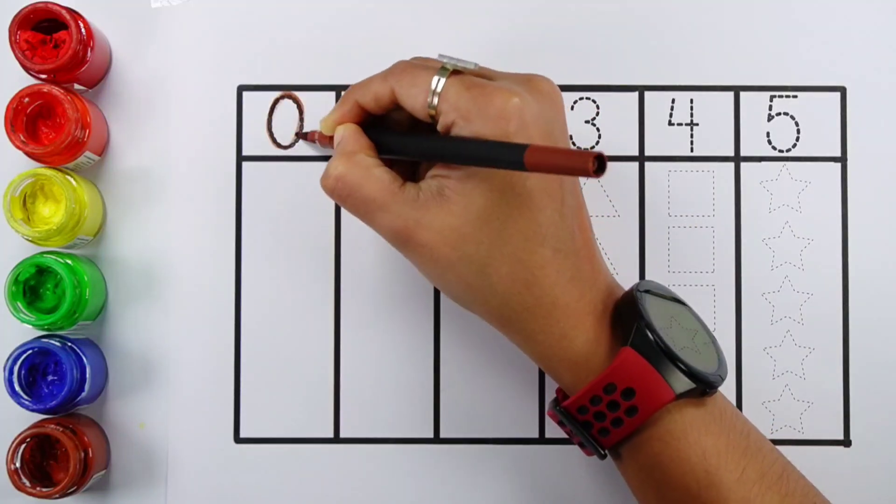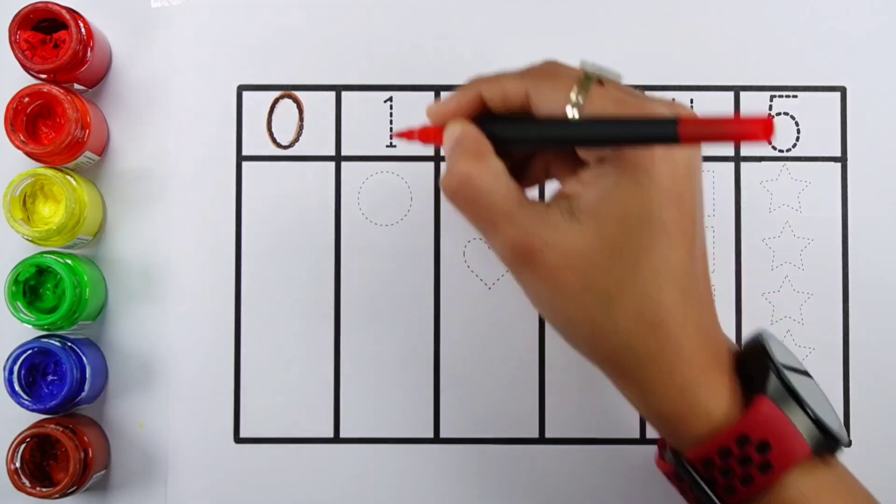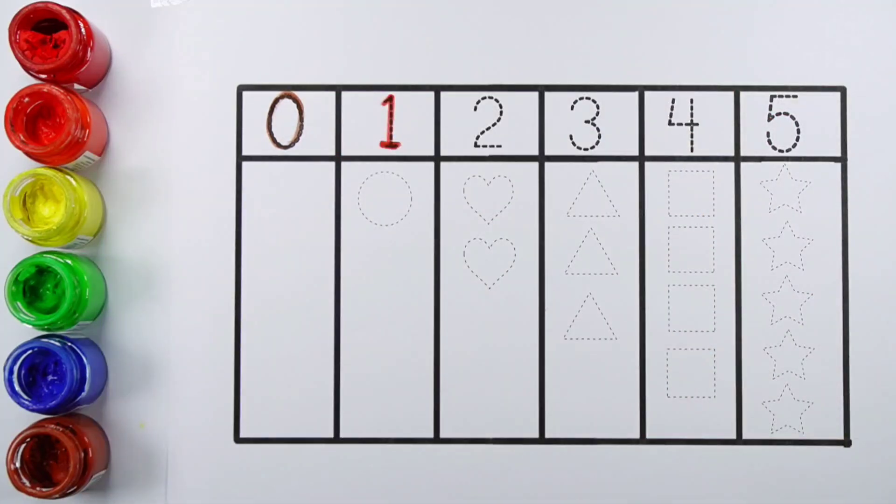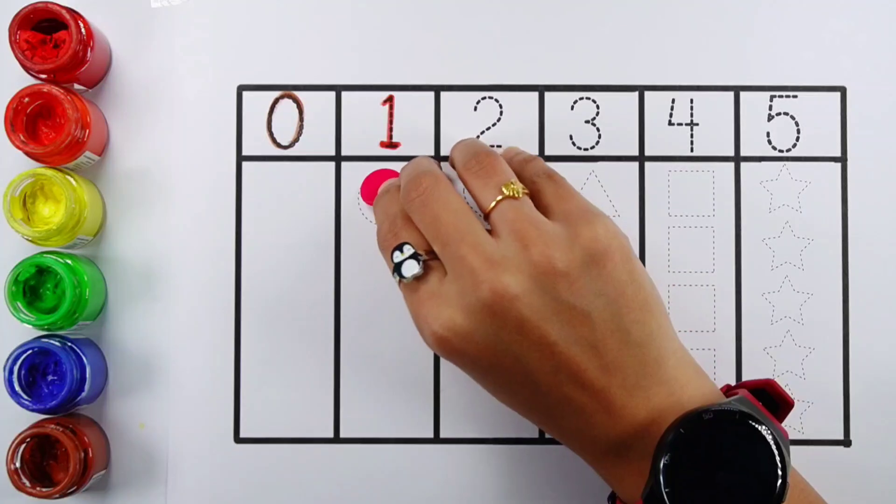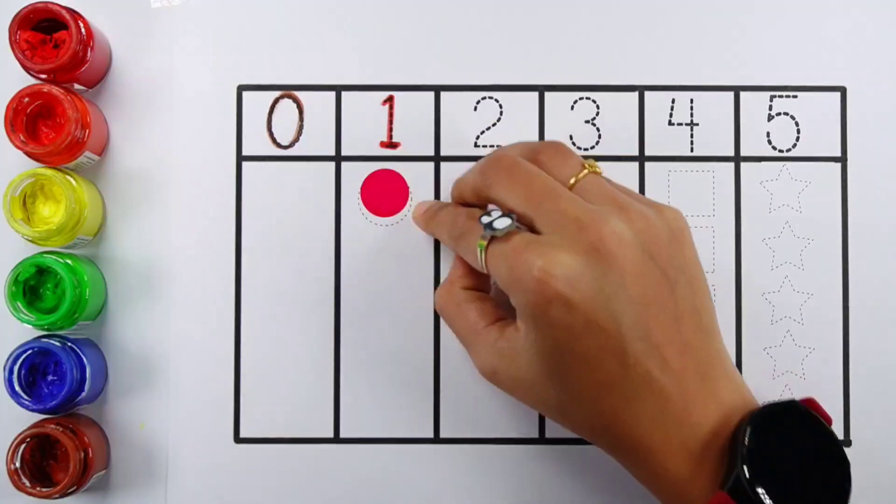Zero, zero shapes. Number one, one circle.